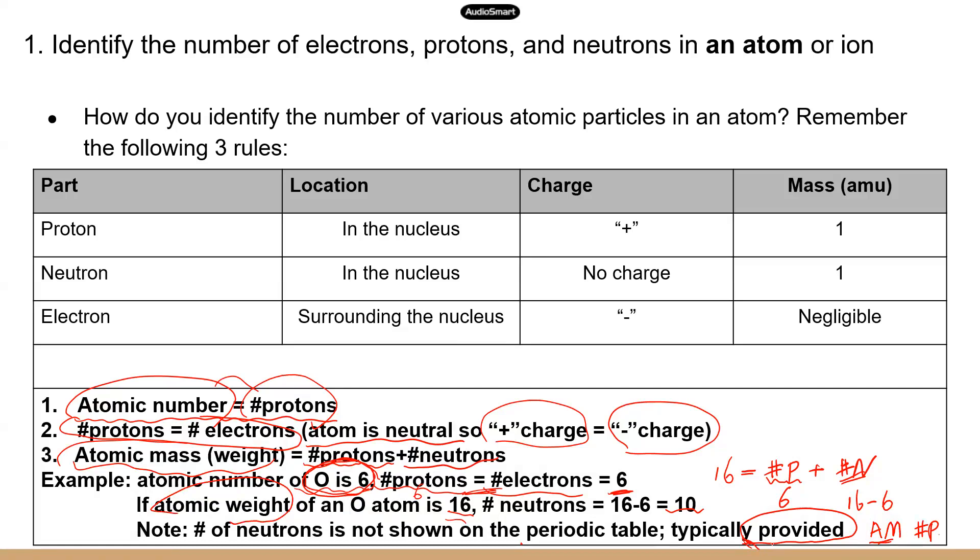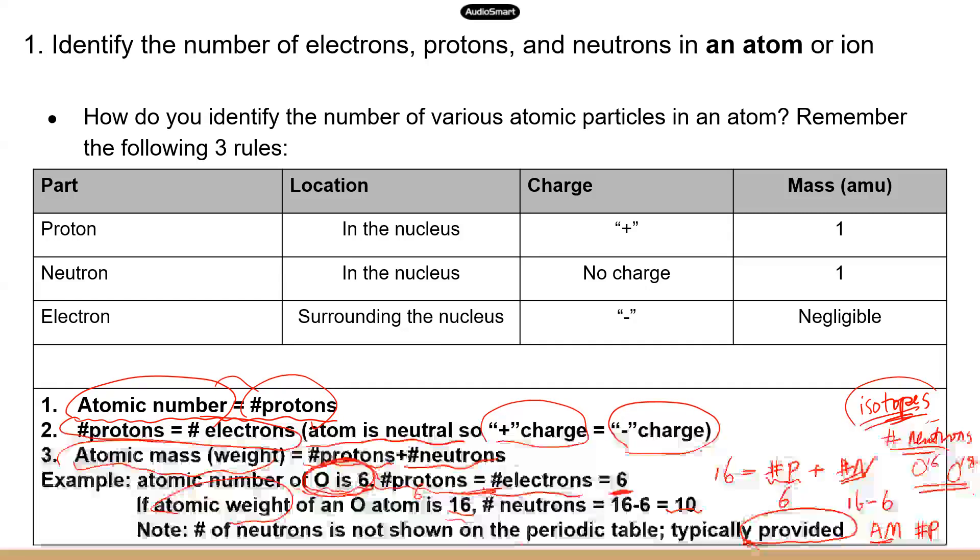For each element, you have isotopes. We talked about this in the TEAS 6 video. Elements may have multiple isotopes, and different isotopes have a different number of neutrons. So for example, oxygen, there's oxygen 16 and oxygen 18, right? See, these two types of oxygen atoms carry different number of neutrons. So you can see that depending on which isotope you're talking about, the number of neutrons can vary, right? So that's why you do not have to memorize the number of neutrons for any element for TEAS. That information will be given or that's something that you need to determine based on two other pieces of information, right? Atomic weight and the number of protons.